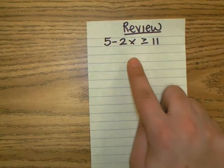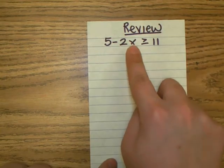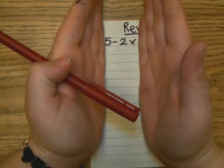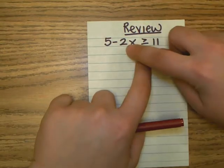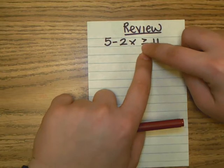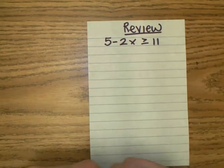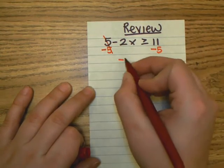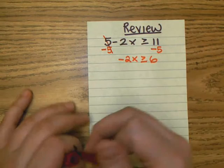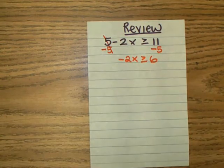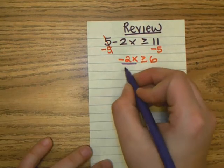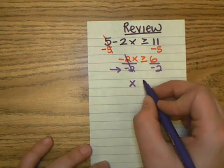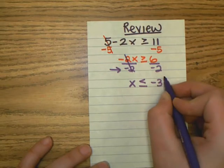Last chapter we were solving an inequality with one variable, figuring out what numbers could go in for x to make this side greater than or equal to 11. When we solve an inequality, we solve it just like an equation. However, if we end up dividing by a negative on both sides — which we are in this problem — we have to switch the direction of the inequality symbol.